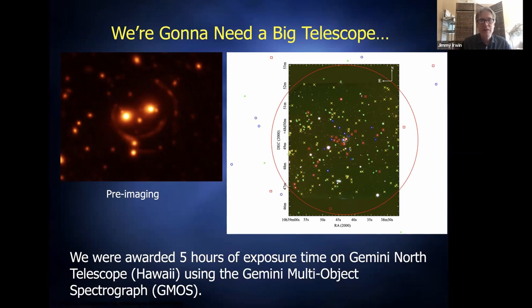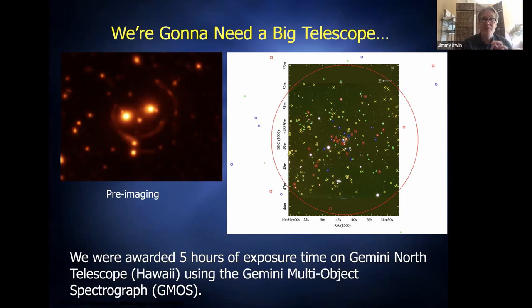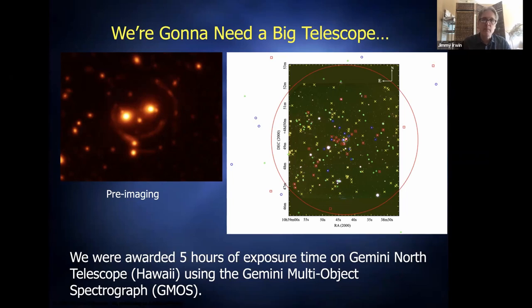Going to observe at different telescopes is quite different. At smaller telescopes like the MDM 2.4m on Kitt Peak, you're completely on your own all night — moving the telescope yourself, filling the dewar with coolant to keep the CCD cold. At larger ones like the 6.5m Magellan in Chile, telescope operators handle all the physical controls while you set the targets, exposure times, and filters. At Gemini's eight-meter, you don't even go — it's all queue-scheduled by the operator.